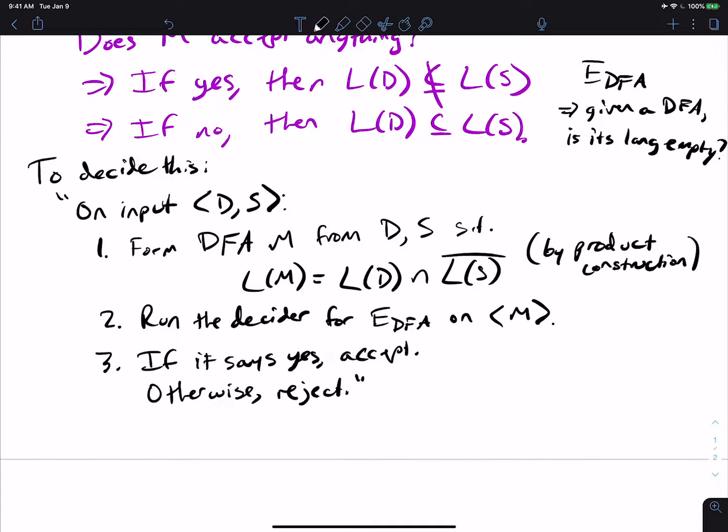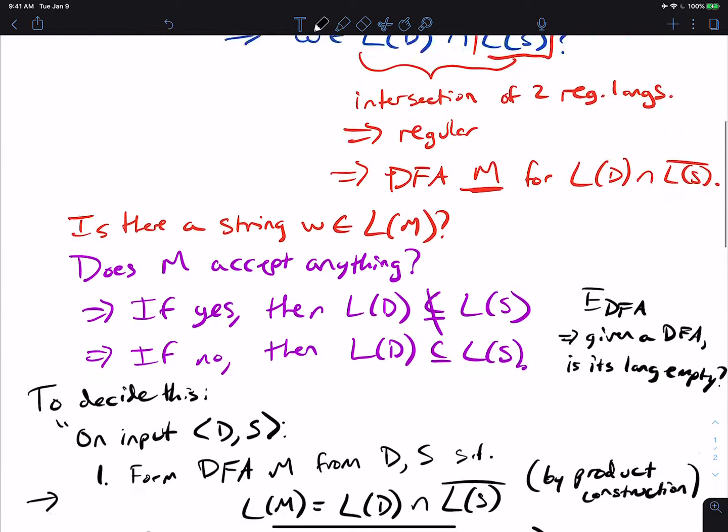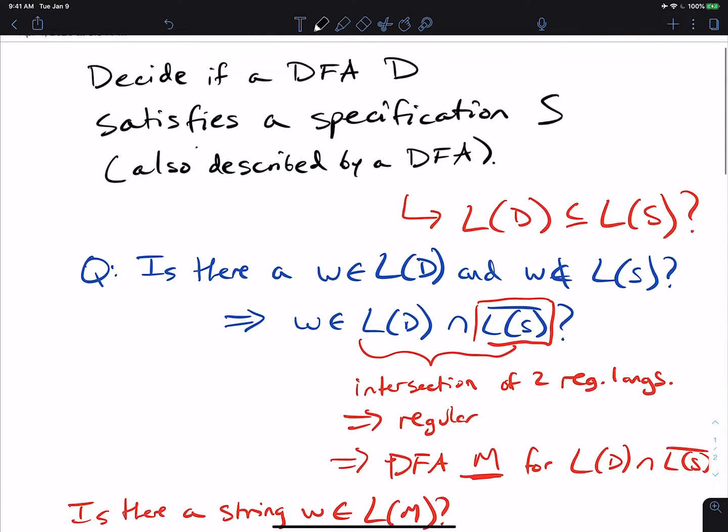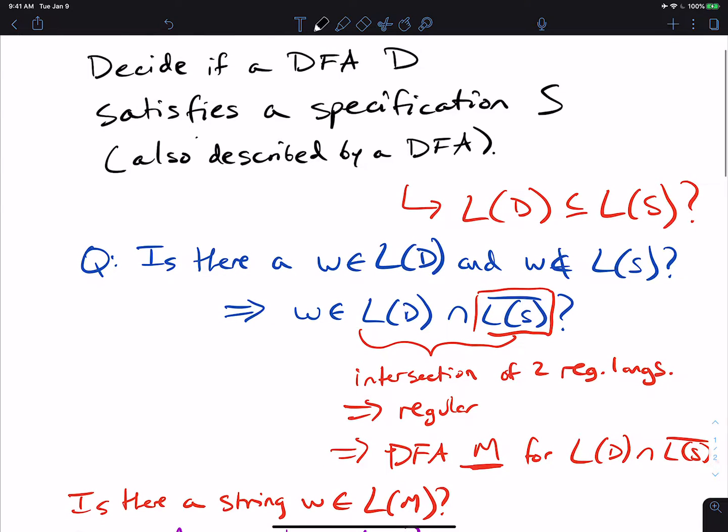And this is decidable because, well, step two, we assume is decidable because there's a decider for it. And the first step is decidable because it's just the product construction and there's an algorithm for it. So we have effectively proved now that it is decidable to figure out whether a DFA satisfies a specification S if the specification is described by a DFA.